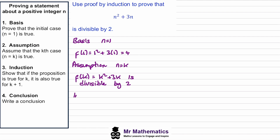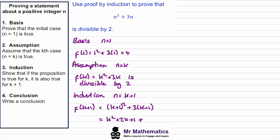Now for our inductive step, where n is equal to k plus one. We want to work out f of k plus one. We substitute this expression into our function and get k plus one, all squared, plus three lots of k plus one. Expanding the brackets gives k squared plus two k plus one plus three k plus three. We need to show that this is divisible by two, and we can use our assumption. We've assumed that k squared plus three k is divisible by two, and we have those terms here.